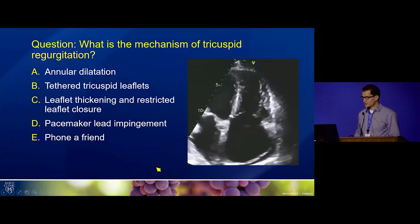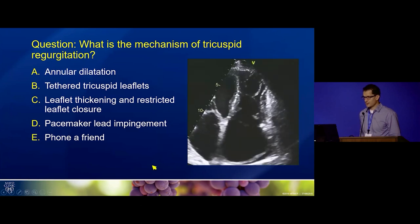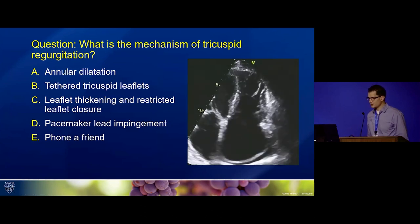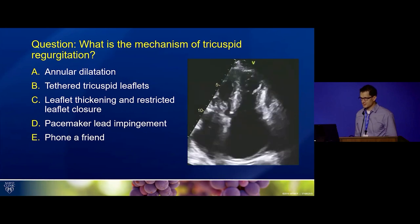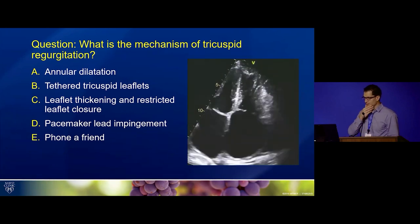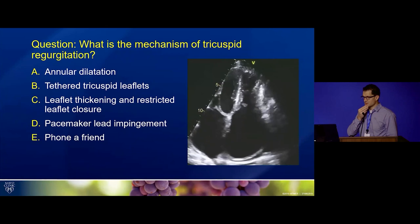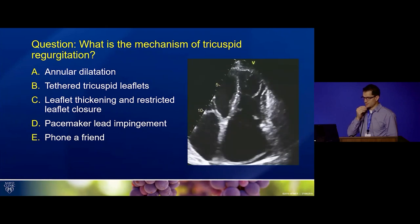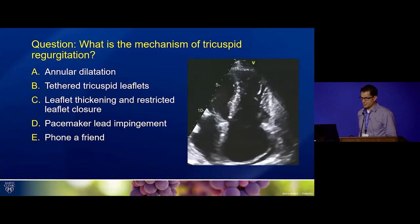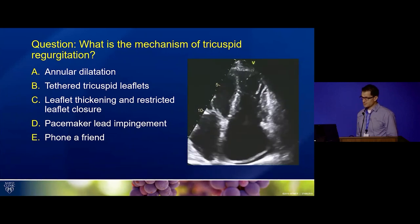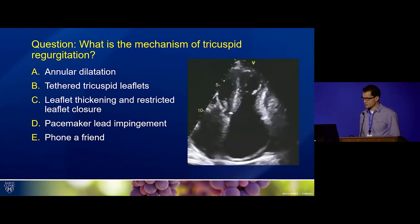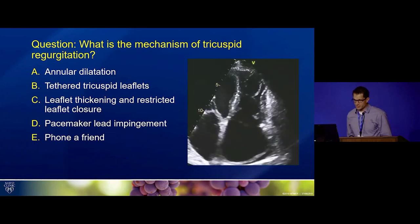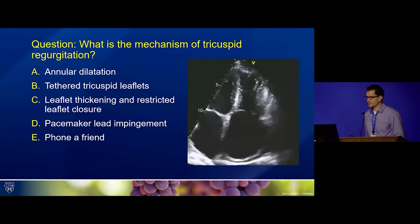The first question addresses how we treat this patient: what is the mechanism of tricuspid regurgitation in this case? Is it A, annular dilatation; B, tethered tricuspid leaflets; C, unrestricted leaflet closure; or D, pacemaker lead impingement?